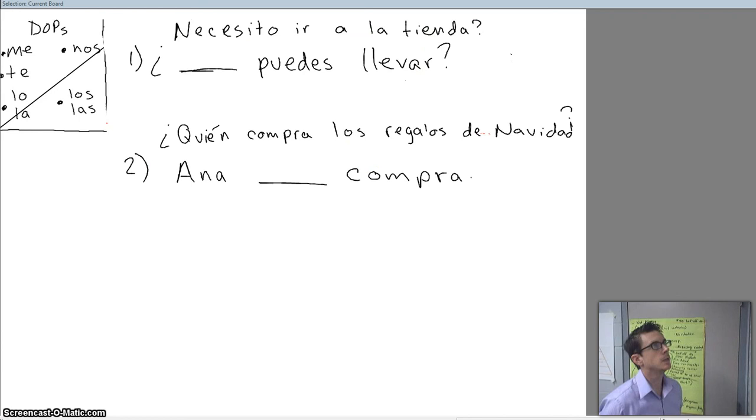Two more real quick examples. Necesito ir a la tienda. The bottom part says something, can you take? So, who is it that needs to go to the store? Yo necesito ir a la tienda. So, what is our direct object pronoun that will correspond with yo to say, can you take me? You are correct. It will be me. ¿Me puedes llevar? Can you take me?